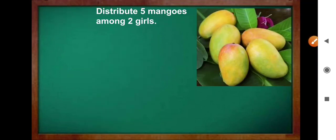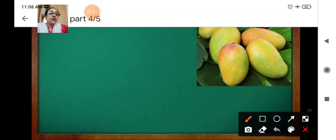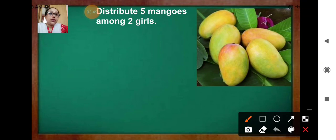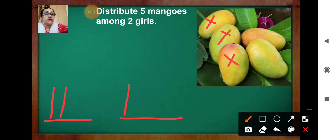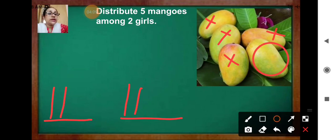Now, distribute five mangoes among two girls. Give one mango, two mangoes, three, then four. This one mango is left out — so it is the remainder.